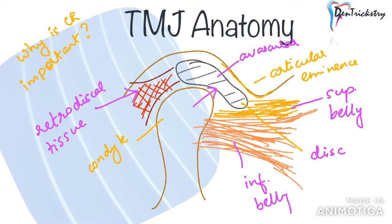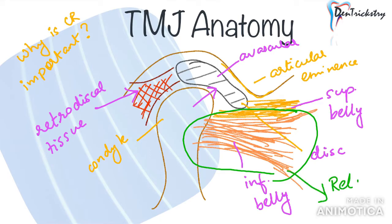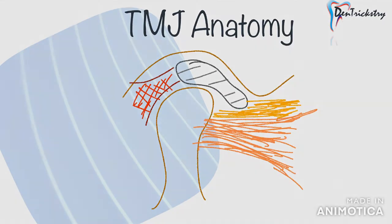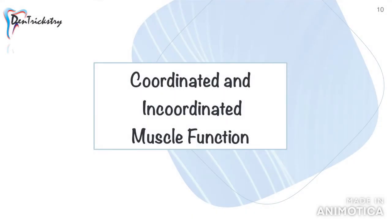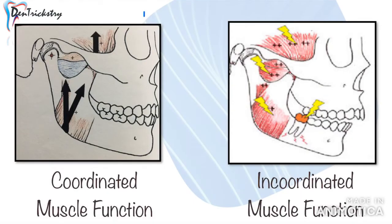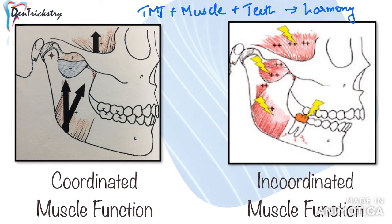You have to understand that at all times it is essential that your inferior lateral pterygoid remains in a relaxed state when your teeth are in occlusion, to have harmony between your temporomandibular joint, the masticatory muscles and your teeth. This brings us to understanding the concept of coordinated and incoordinated muscle function. When all this is in harmony, you have coordinated muscle function. Release of the inferior belly of lateral pterygoid during mouth closure or during elevator muscle contraction is the goal for occlusal harmony. Such coordinated muscle function is possible only if the condyle-disc assemblies seat comfortably in centric relation.